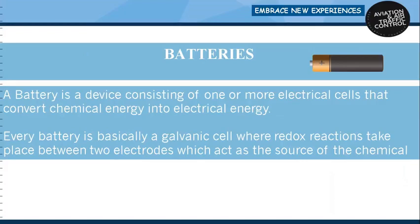A battery is a device consisting of one or more electrical cells that convert chemical energy into electrical energy. Every battery is basically a galvanic cell where redox reactions take place between two electrodes which act as a source of chemical energy. A battery uses chemical reactions to produce and receive electrons at accessible points called terminals — electrically conductive areas on the outside of batteries. The terminal connected to the electron-producing cell is called the anode, that is the negative terminal, while the terminal connected to the electron-accepting cell is called the cathode, that is the positive terminal.